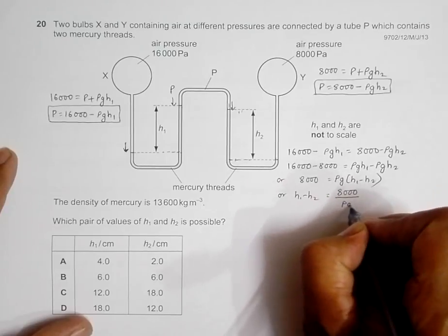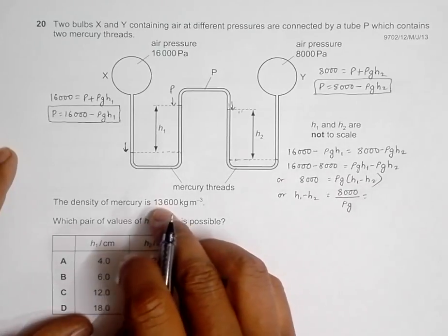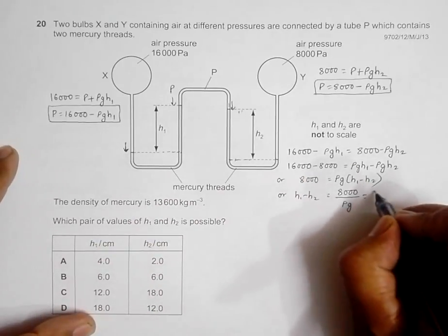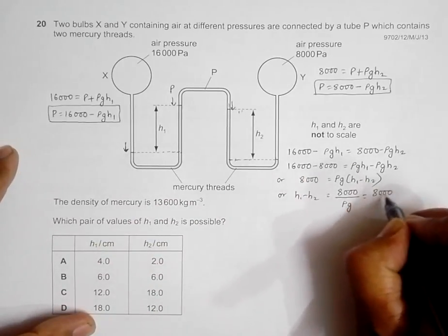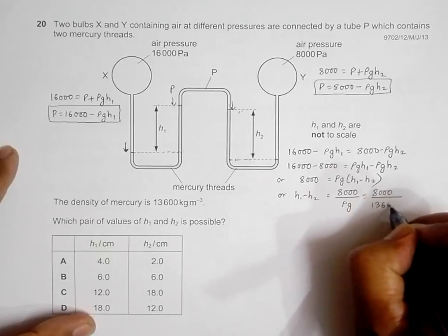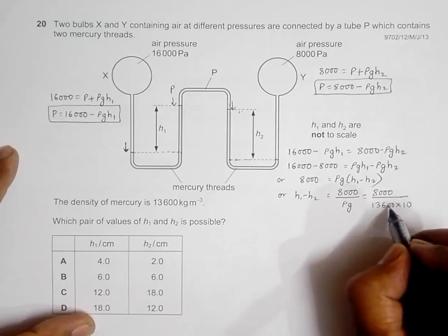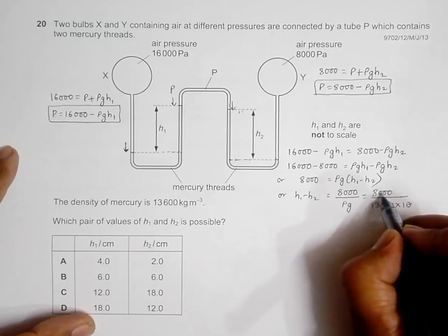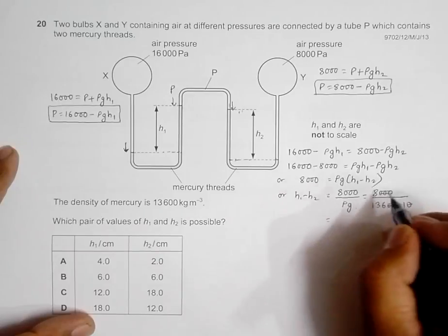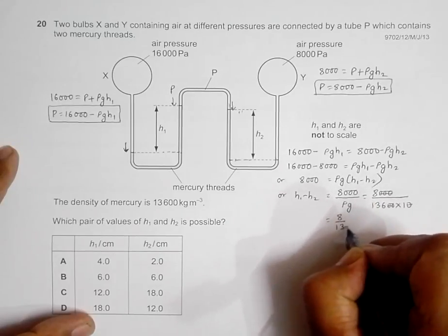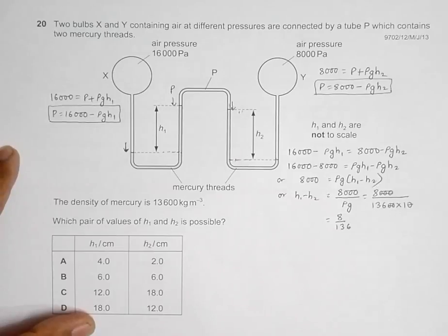This gives us h1 minus h2 equals 8,000 divided by ρg. The value of ρ given is 13,600, so this should be 8,000 by 13,600 times g. Let's assume that g is equal to 10, so we have 8 divided by 136.